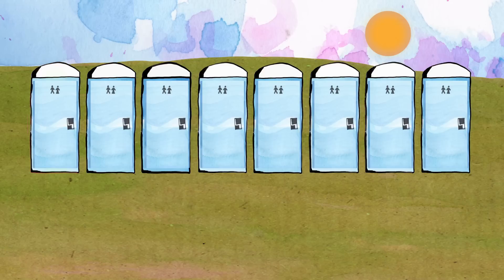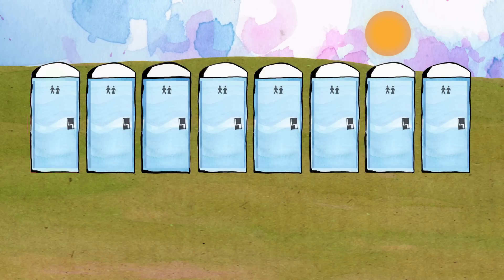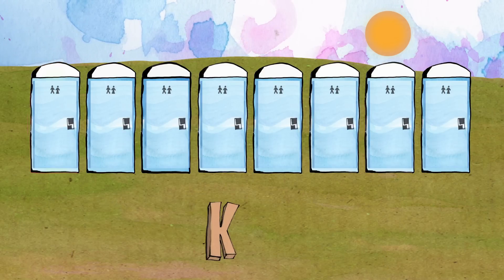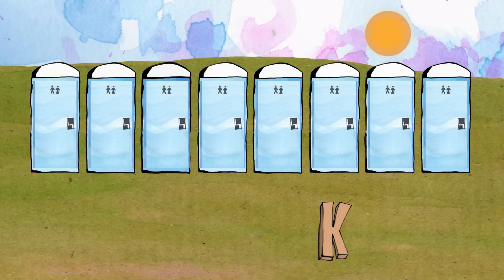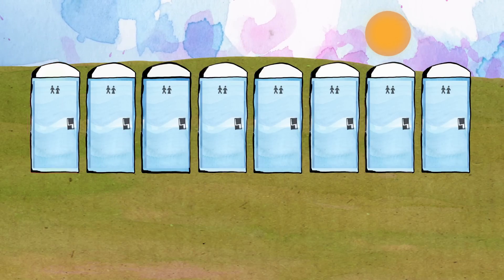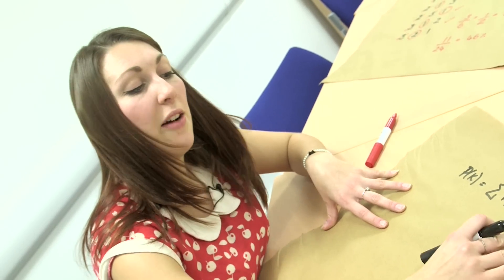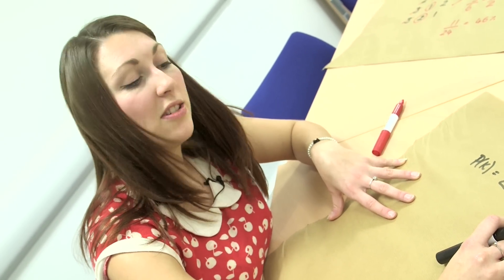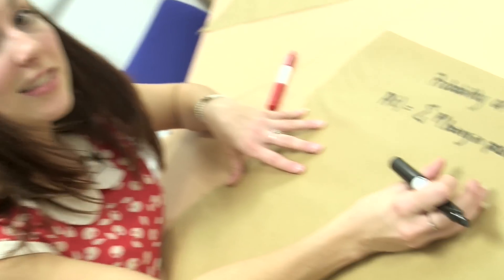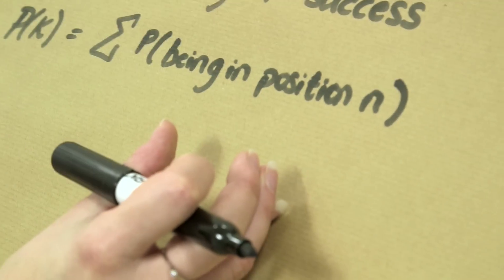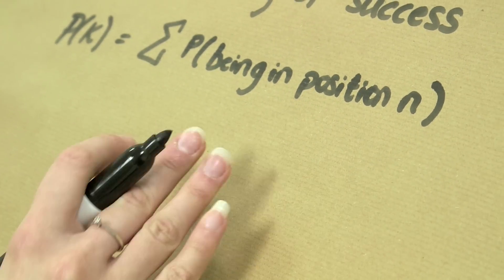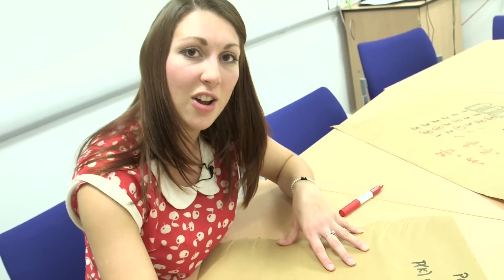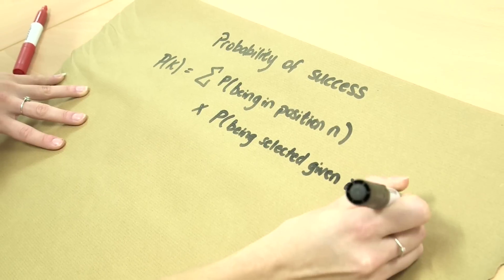It's the probability that my toilet that I choose, K, is in position N. And then I want to look at the probability that, now that I'm in that position N, what's the probability that I'm actually going to select that toilet? Because remember, we don't always necessarily select the toilet unless it was better than what has come before it.